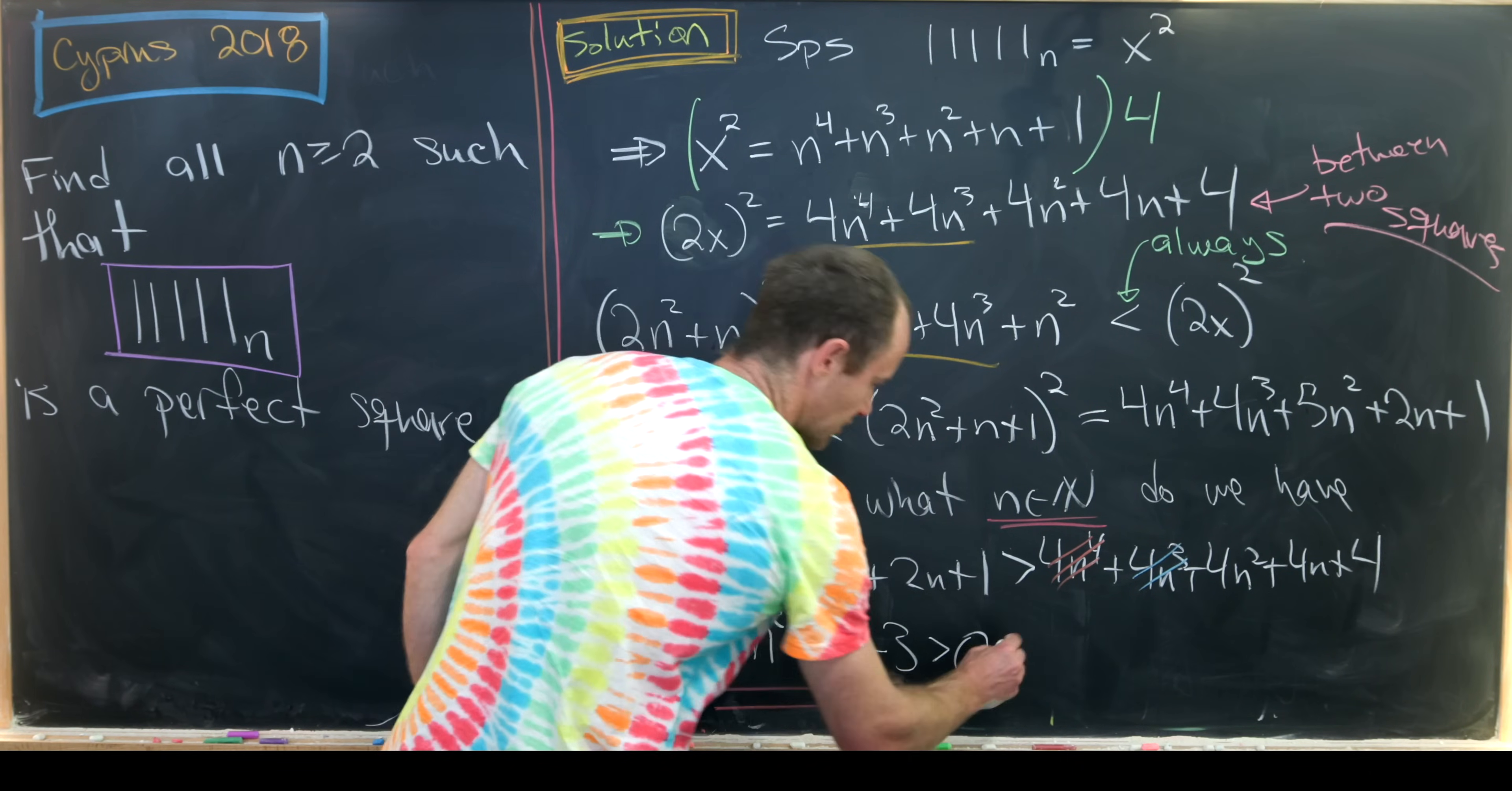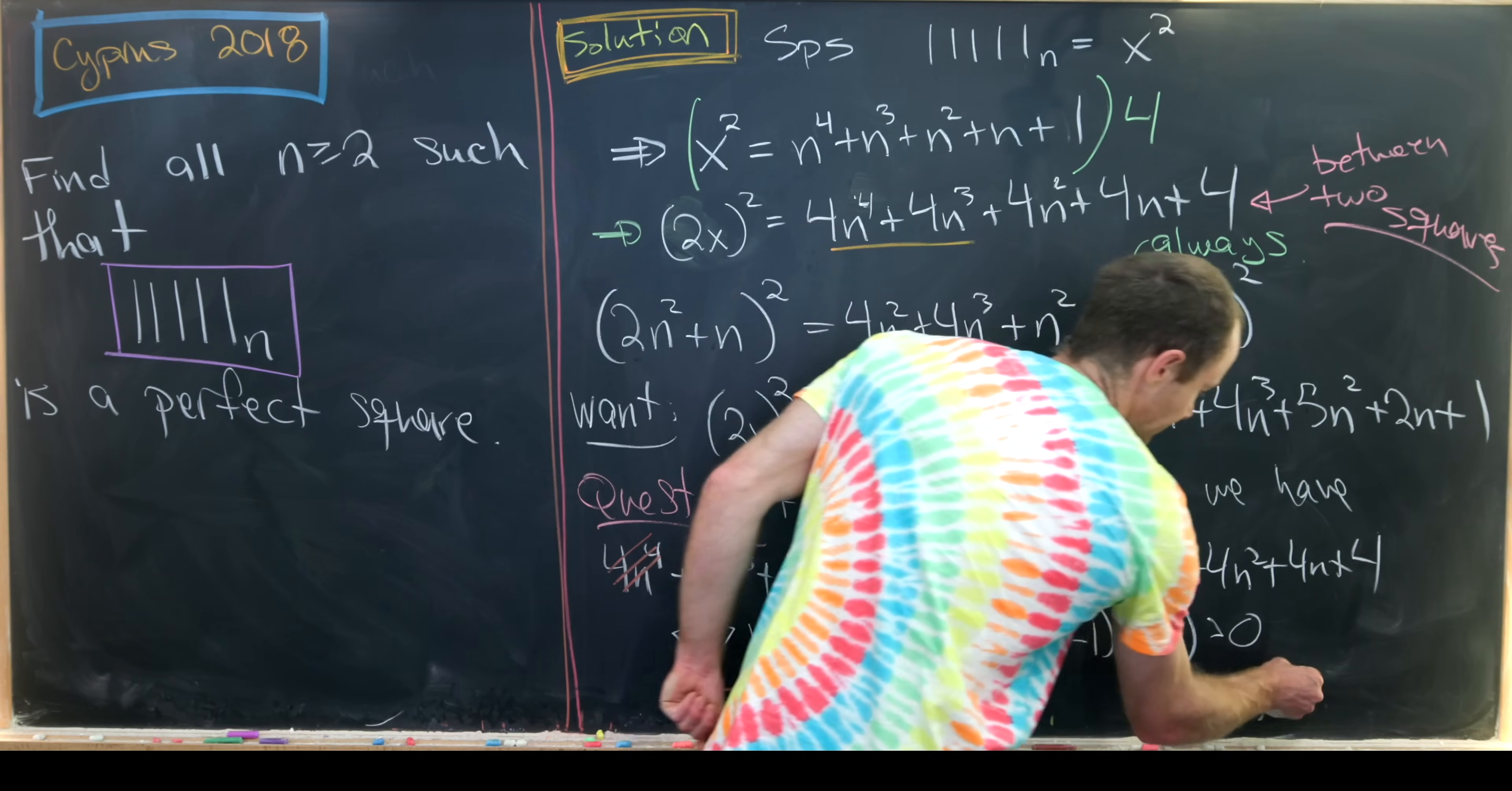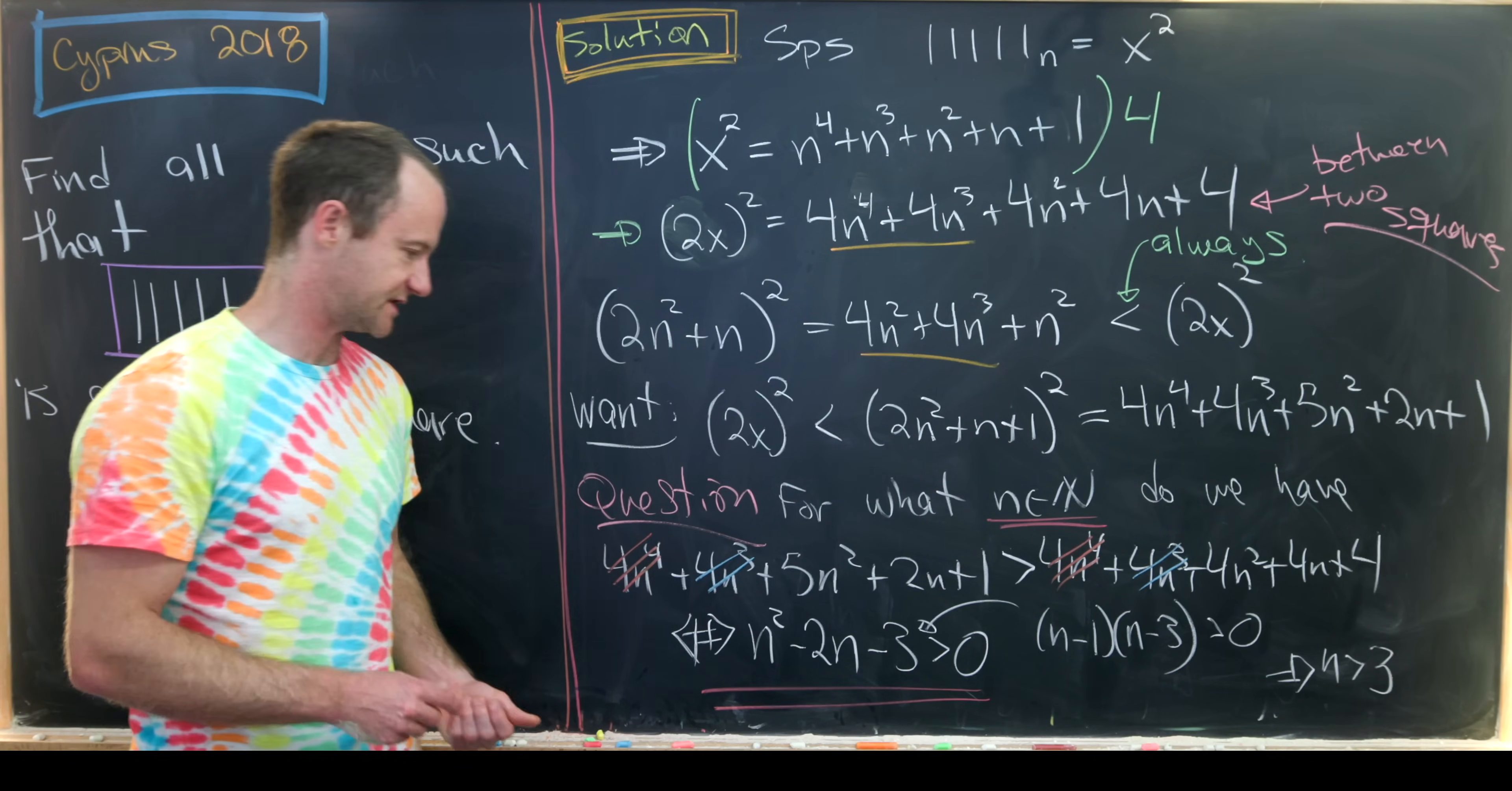So in other words, we want to determine for what n natural numbers do we have this occurring. This quadratic expression is bigger than 0. But luckily, this quadratic expression is very factorable. We can factor this as n minus 1 times n minus 3. And we want that to be bigger than 0. Well, notice that's going to be bigger than 0 when n is bigger than 3. So here we get that n is bigger than 3. Because if n is bigger than 3, then n minus 3 is bigger than 0, and n minus 1 is bigger than 0.